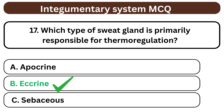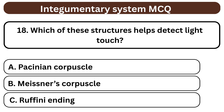Question 18. Which of these structures helps detect light touch? A. Pacinian corpuscle. B. Meissner's corpuscle. C. Ruffini ending. The answer is B. Meissner's corpuscle.